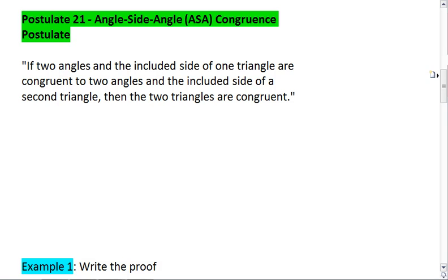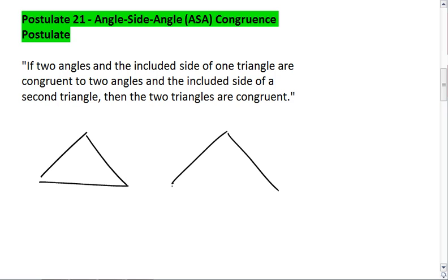And this tells us that if two angles... Well, first of all, we need two triangles. But if two angles and the included side of one triangle are congruent to two angles and the included side of a second triangle, then the two triangles are congruent.